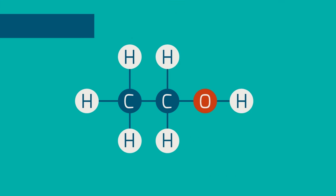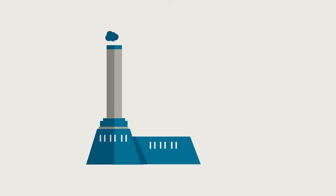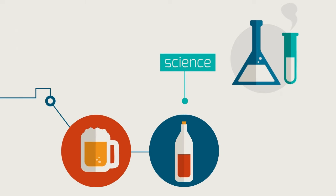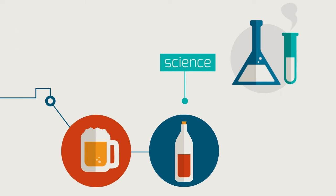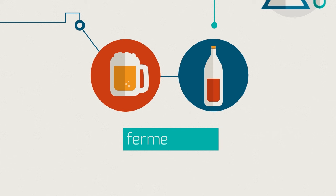We also use the two carbon alcohol, ethanol, as an ingredient in alcoholic drinks. The alcoholic drinks industry is huge and making beer or wine requires science. The process for making alcoholic drinks is called fermentation.